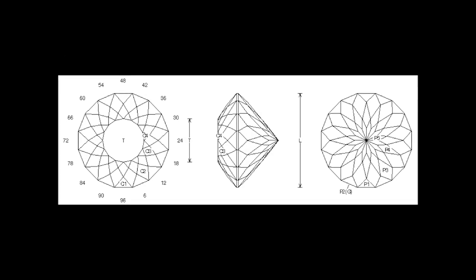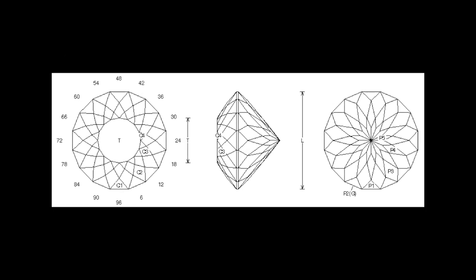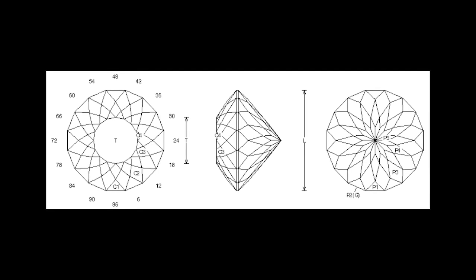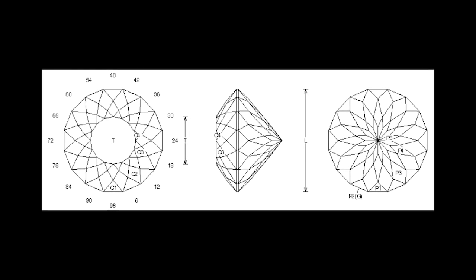So if I cut this peridot correctly, the two gemstones should look like this from the top, side, and bottom when I'm finished.